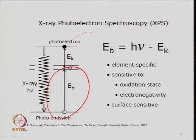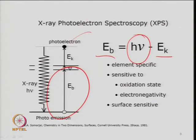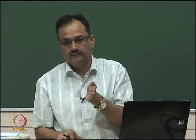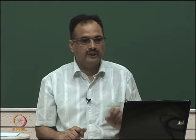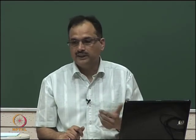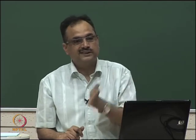The binding energy is equal to the energy of the photon (hν) minus the kinetic energy (E_k) minus the work function φ, which is roughly of the order of 4 eV — a low number. XPS is sensitive to the oxidation state. An energy shift occurs when the metal goes from zero valency to a positive or negative state, causing a change in binding energy. From this energy shift you can determine chemical composition as well as oxidation state.